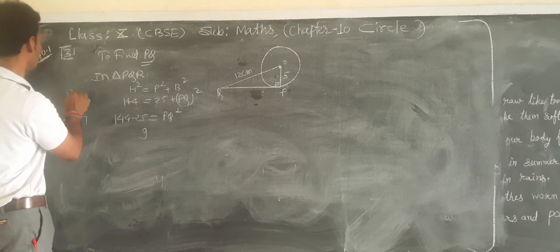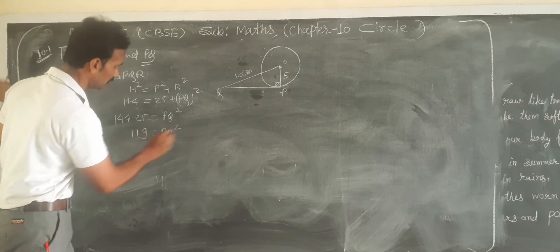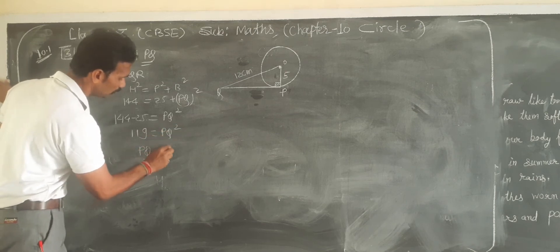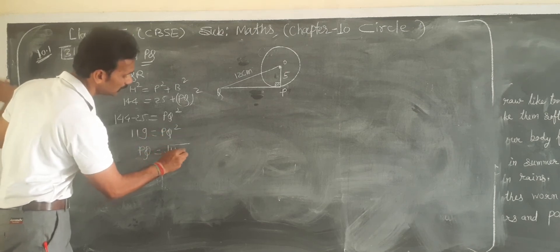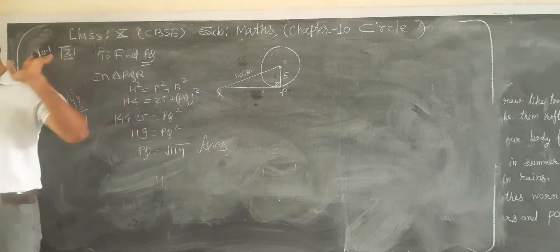So 119 equals PQ square, then PQ equals root of 119. This is your answer. Clear.